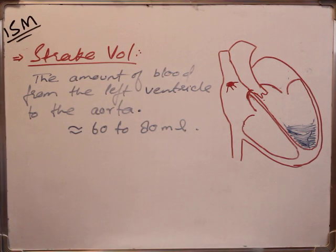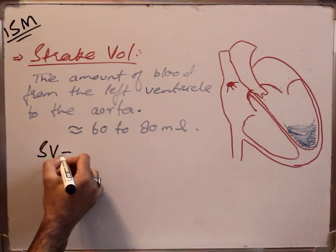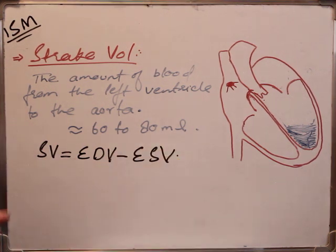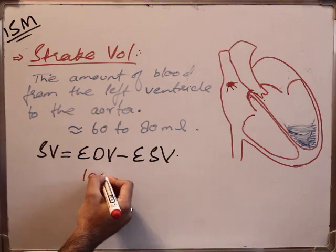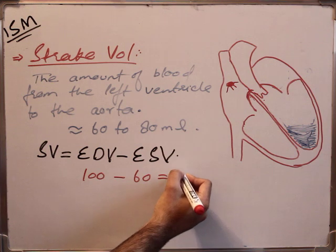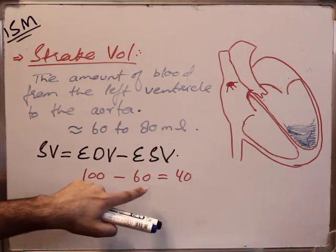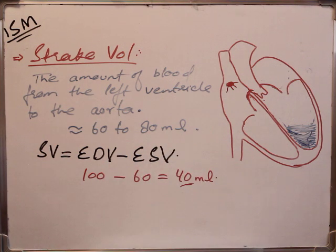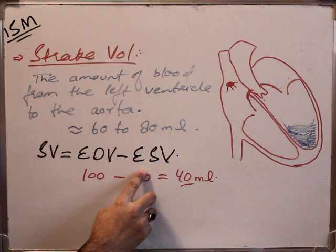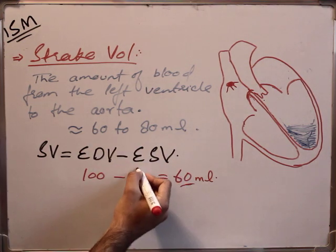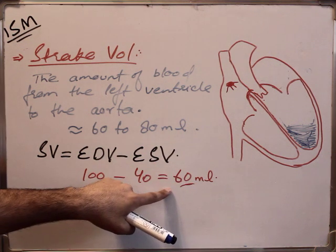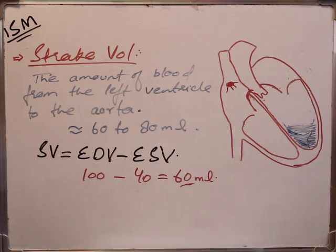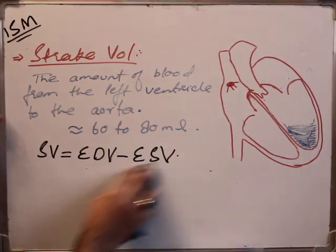In other words, stroke volume equals end diastolic volume minus end systolic volume. That will be 100 minus 60, which is 40, or 100 minus 80, which is 20 — so 20 to 40 milliliters, or approximately 60 milliliters. This 60 to 80 milliliters of blood is called stroke volume.